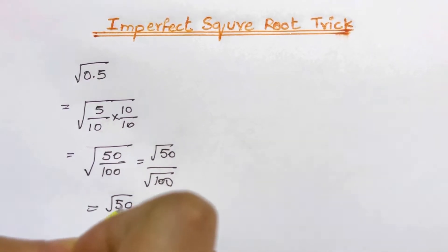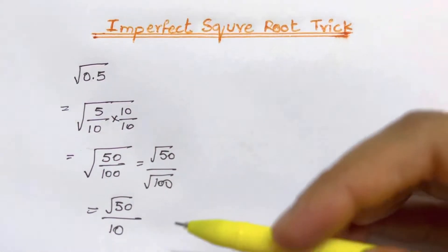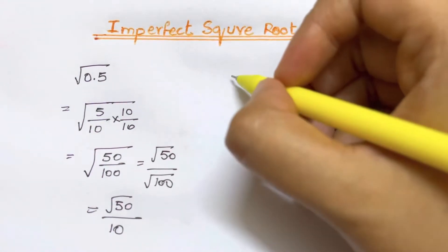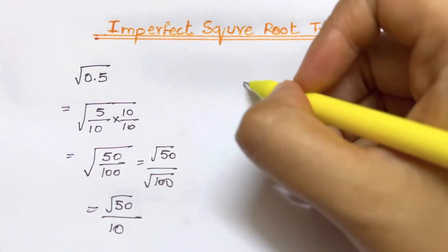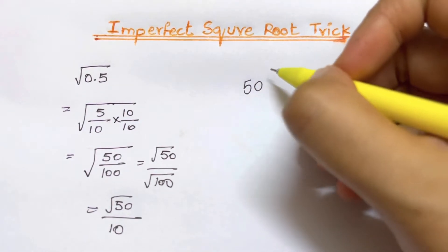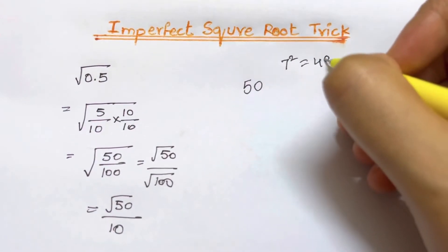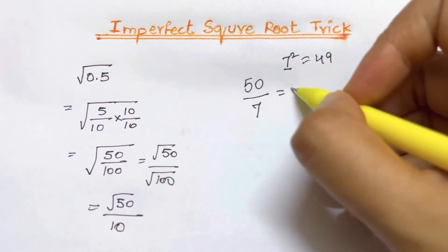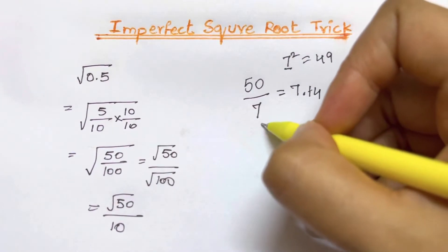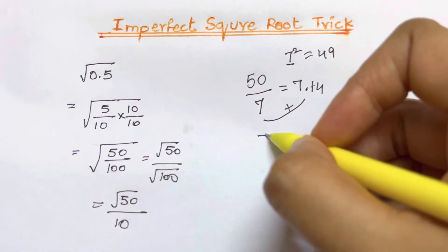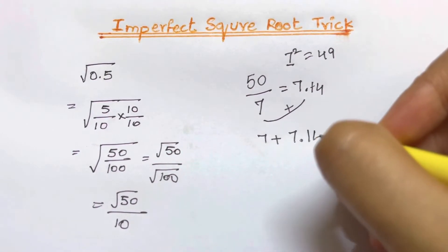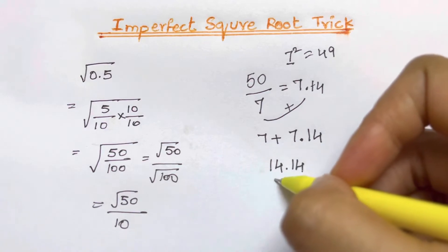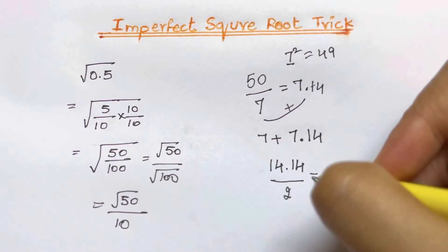So you will have square root of 50 divided by 10. Now we are going to solve for square root of 50. What is the nearest perfect square to 50? That's 49 — 7 squared is 49. So we divide 50 by 7, which gives us 7.14. Now we add 7 plus 7.14, which is 14.14, and then divide by 2.